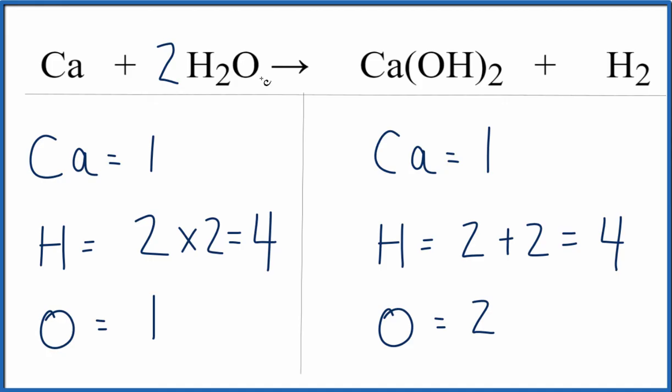And then one times the two, because this two goes to everything here, one times two. That'll give us two oxygen atoms. And we've balanced the equation. So that's it. Be careful. Make sure you count up all of the hydrogens here on the products.